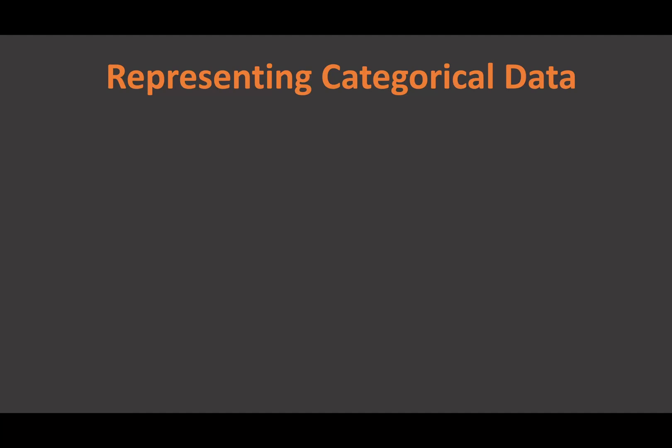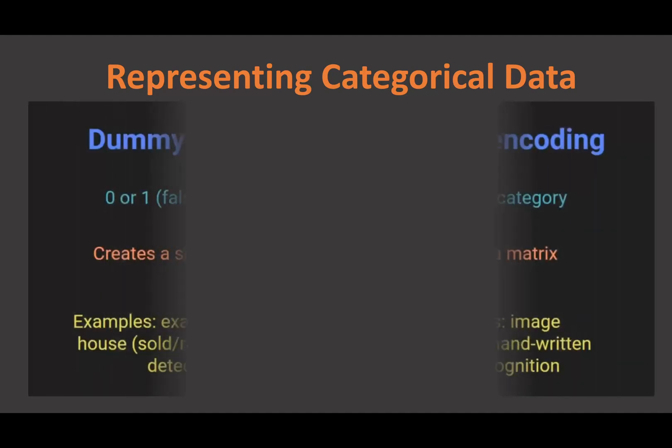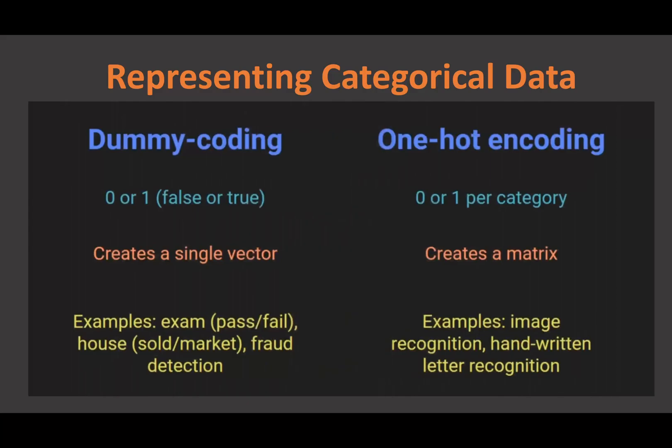Representing categorical data on a computer uses one of two methods: dummy coding or one-hot encoding. One-hot encoding is a somewhat confusing term, but it comes up very often in deep learning. Dummy coding gives a value of zero or one, representing false or true.